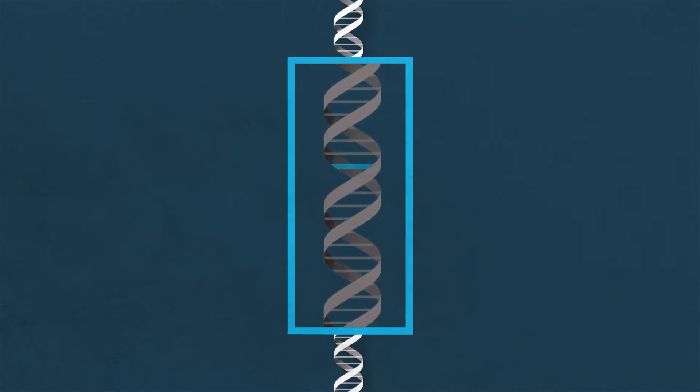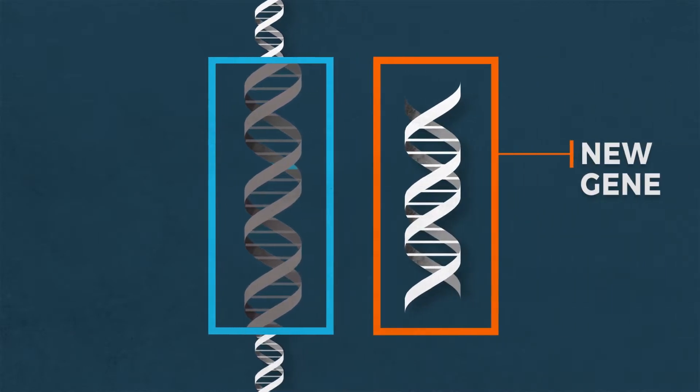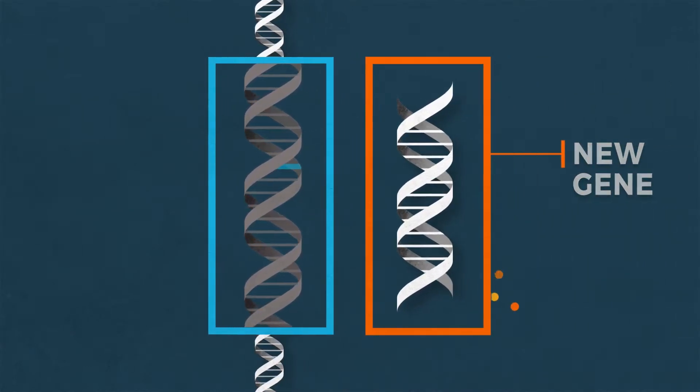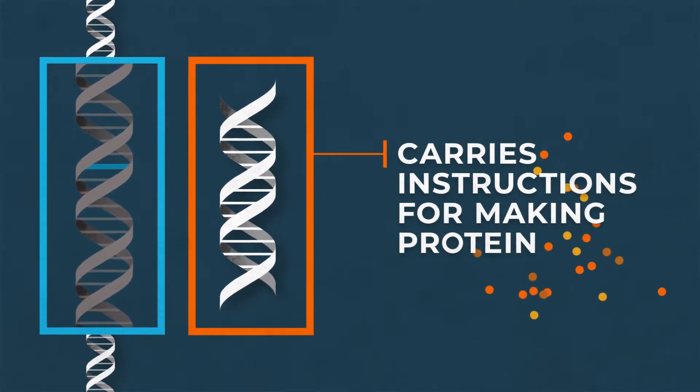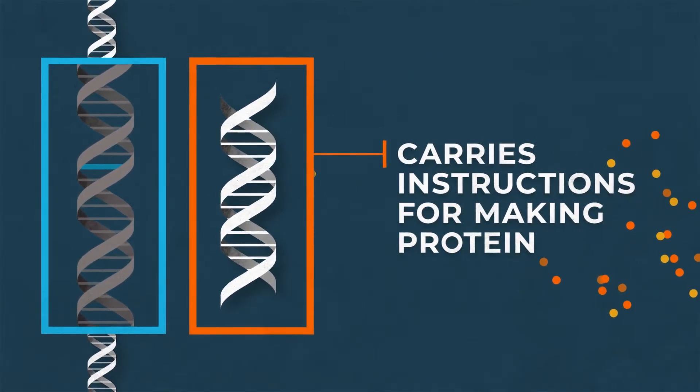Gene replacement therapy is designed to target the root cause of a disease, the gene that doesn't work properly, by delivering a new, working copy of the gene. The new gene carries the instructions for making the protein the body needs that it couldn't make before.